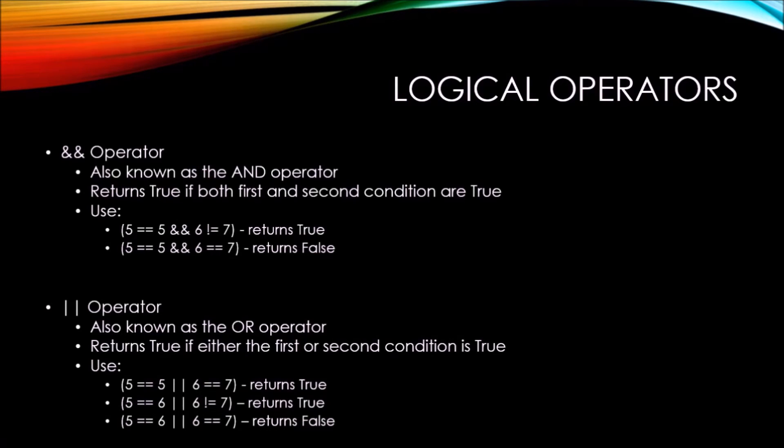In this case, five equals five or six equals seven would return true since five does equal five. If either one of these conditions is true, then the OR operator would return true. Five equals six or six does not equal seven returns true. Since six does not equal seven, the second condition is true and thus the OR operator also returns a true result.